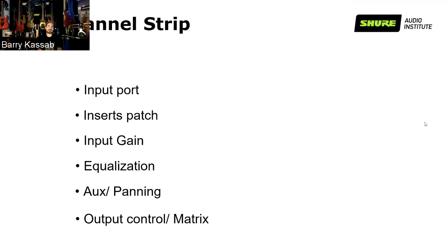After input gain, you get your equalization. Part of equalization can include a high pass filter button. If you're using a vocal mic or a mic for the snare or toms, sometimes to save yourself a lot of equalization, you high-pass filter it right away at 80 Hz. Most manufacturers agree on 80 Hz — some do 100 Hz — but the button for the high pass filter is usually right before or next to the gain.